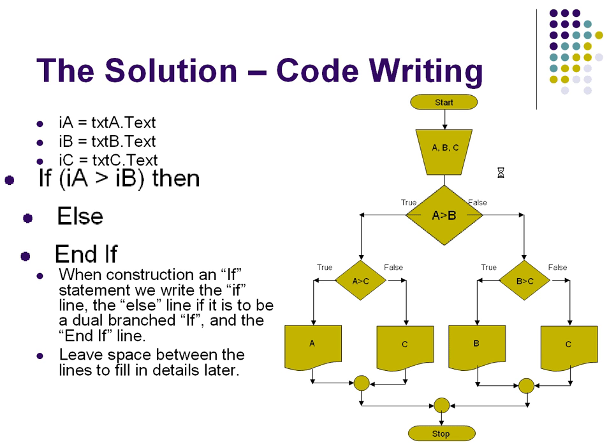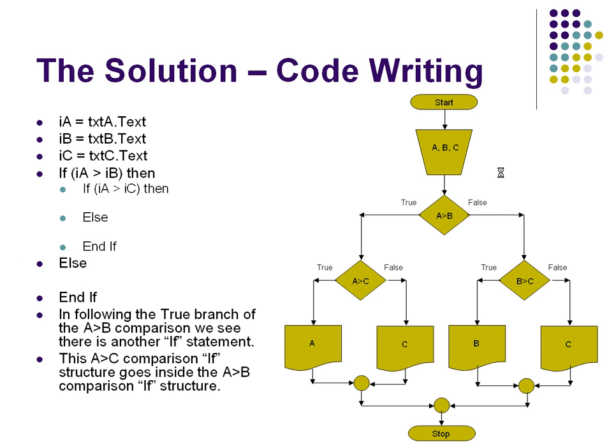Now, if it's true, what do we have hanging off the true branch of that particular statement? Well, we've got a whole other if statement hanging off there. A greater than C. So, what I'm going to do is, right inside that if statement we already have, inside the if part of it, the top part of it, because it's the true part, I'm going to put an entire structure of an if statement. Notice I have if IA greater than IC, then. Just like in my flowchart diagram. The whole if statement is contained within that whole part.